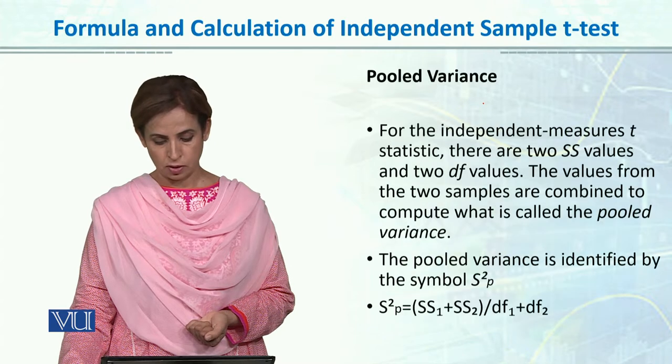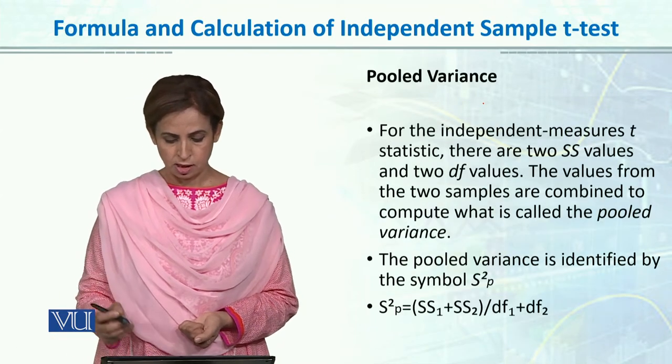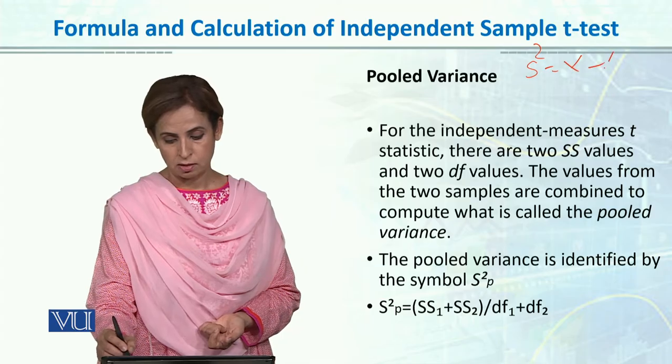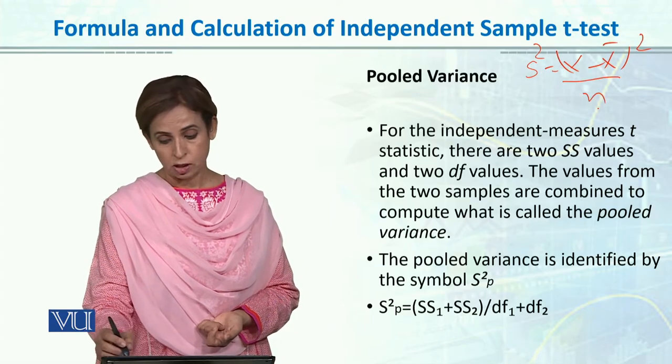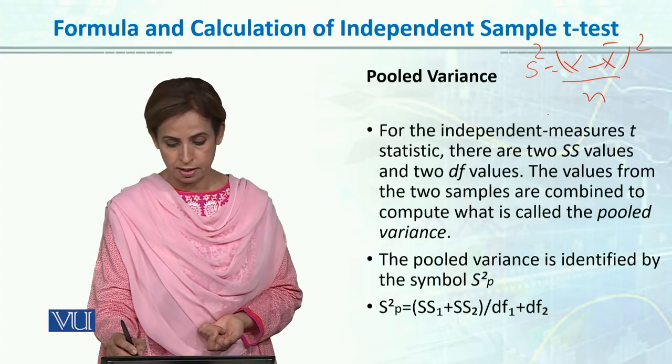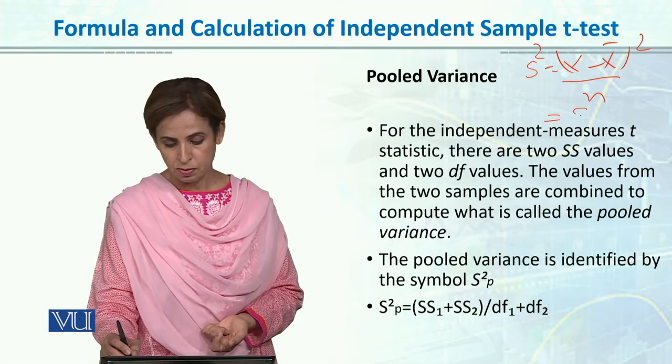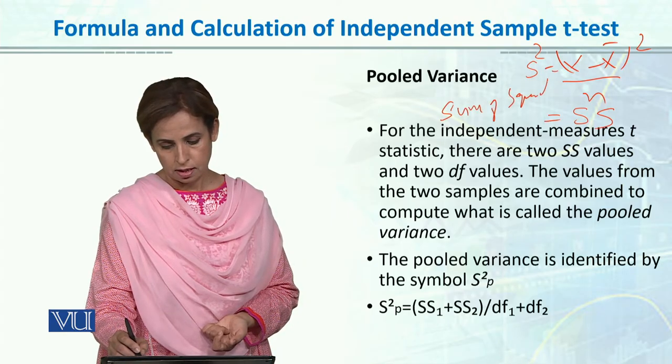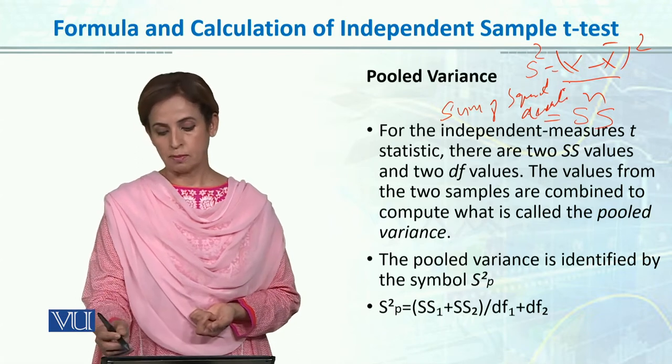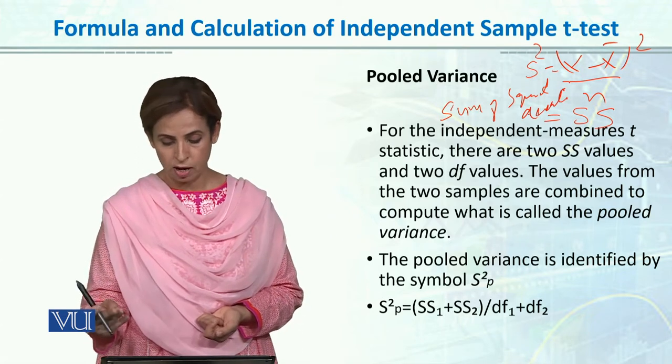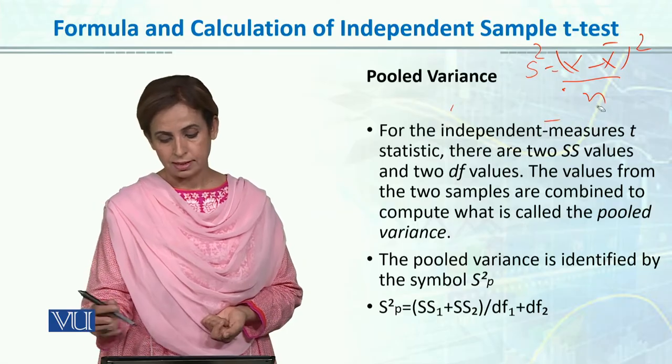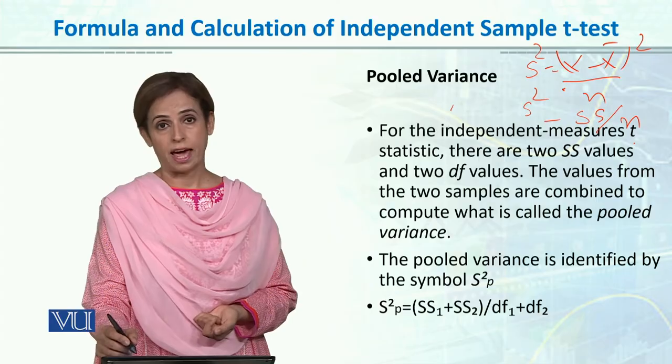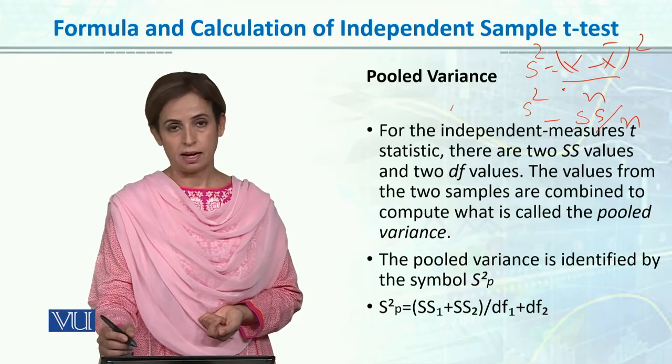This is the formula for variance. I have explained that variance equals x minus mean squared divided by n. This x minus mean squared, we call sum of squared deviations, also denoted as SS. Variance is equal to SS divided by n, or you can write SS over n-1 for unbiased estimation.